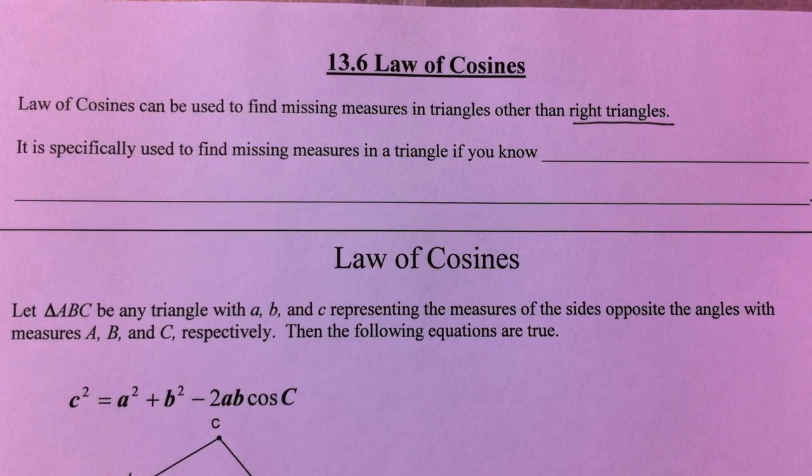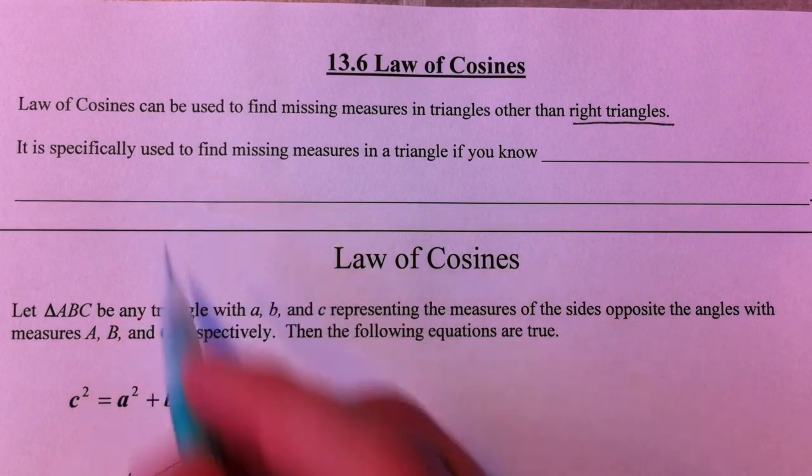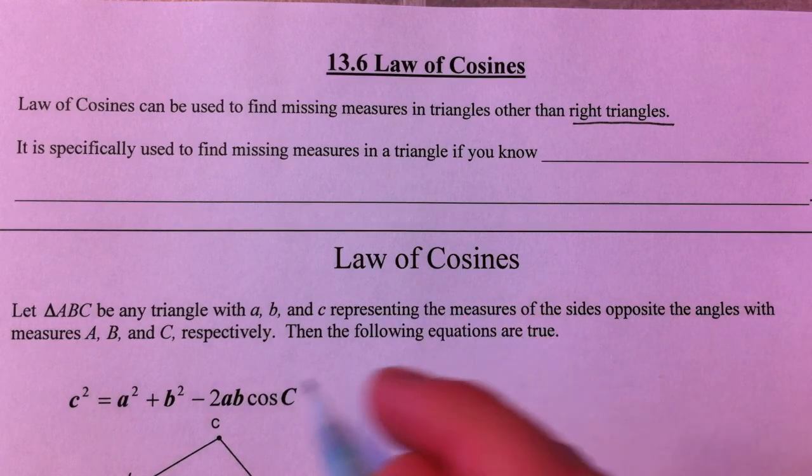So when we don't have the 90 degree angle and sine, cosine, and tangent don't apply, at least in the traditional sense, we have non-right triangles and we can use law of cosines.